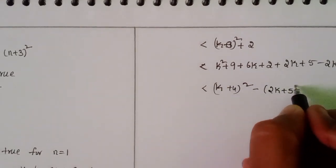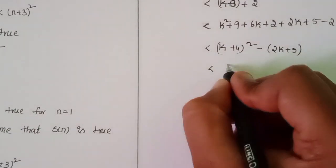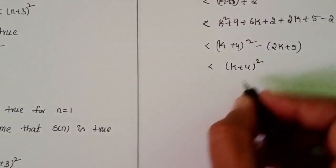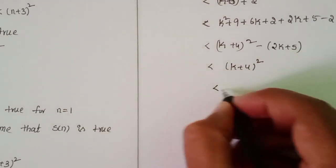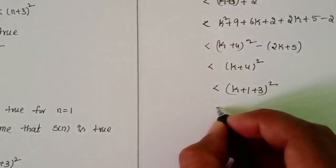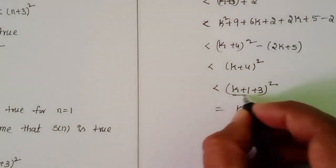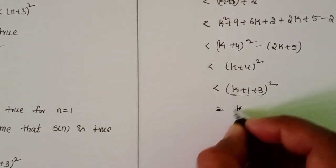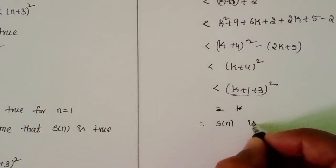2k plus 5 will come k plus 4 whole square. Already this one cancels, so k plus 1 plus 3 whole square. So this is n plus 3. Therefore S(n) is true for n equal to k plus 1.